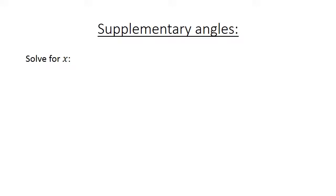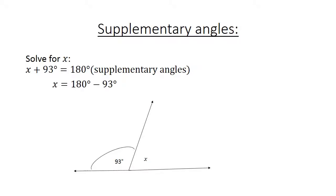Supplementary angles. Again we solve for X. We have X and we have 93 degrees. X plus 93 degrees equals 180 degrees. The reason? Supplementary angles. X equals 180 degrees minus 93 degrees equals 87 degrees.